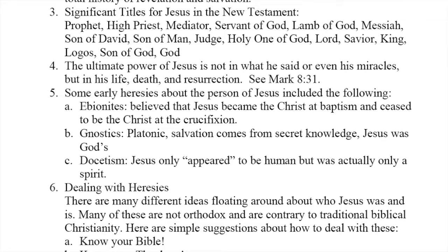Some early heresies about the person of Jesus included the following. The Ebionites believed that Jesus became the Christ at baptism and ceased to be the Christ at the crucifixion. Another group was the Gnostics, who were Platonic in their thinking. Plato believed that the world of the flesh is evil and that the truth is spiritual. Gnostics believed that Jesus could not have come in the flesh because the flesh is evil, and that salvation comes through secret knowledge — Jesus was God's method of showing this secret knowledge. Docetism held that Jesus only appeared to be human but was actually only a spirit. The early church had to fight against these heresies, and some of the New Testament was written against the development of these heresies.